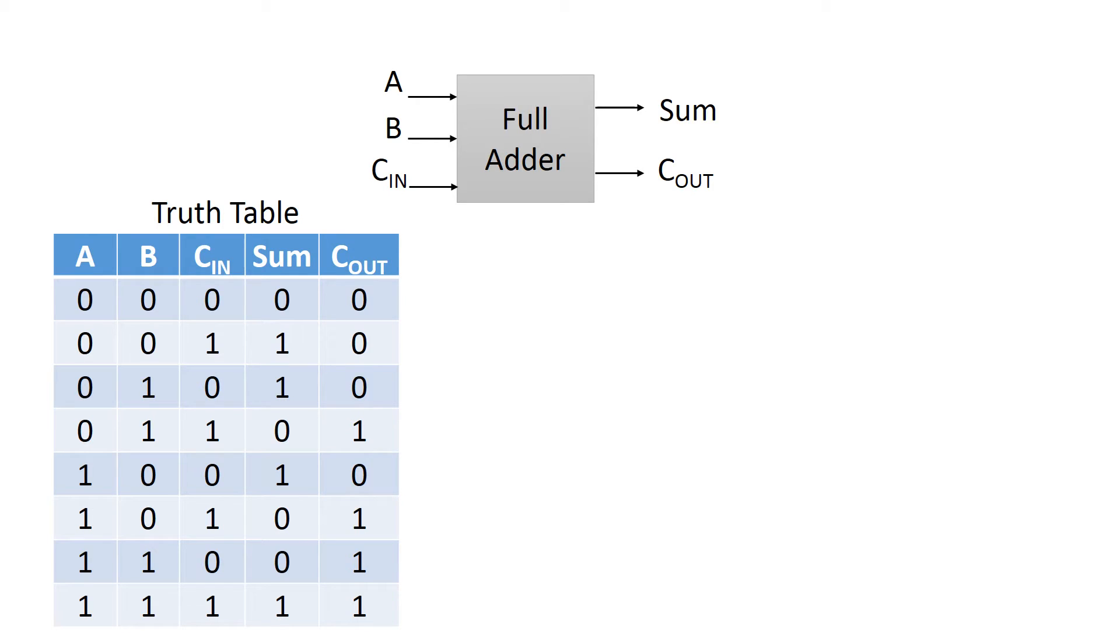The truth table of full adder is given. From table, it is observed that if any one input or all the inputs are high, then sum output is high. If any two input or all the inputs are high, then C out is high.